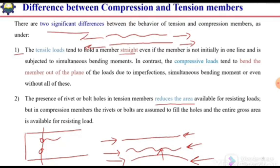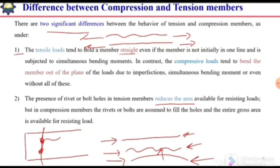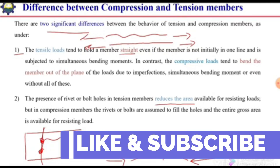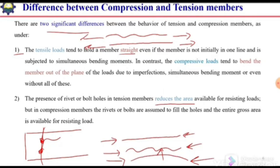Even though bolts are present in these holes, we subtract the area of the holes to calculate the net area, and the capacity is based on that net area. But in the case of compression members, we consider that the bolts fill the holes, and instead of net area, we use the gross area at the connection to calculate the capacity of the member.